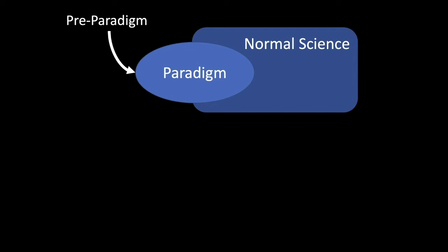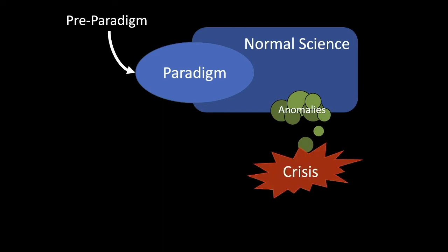But in the course of normal science, anomalies start to accumulate, intractable problems, phenomena that don't easily submit to the methods that the paradigm prescribes, events that the theory cannot explain. And if these anomalies accumulate to a great enough degree and the practitioners in the community see the anomalies as significant to the work of the paradigm, a sense of crisis arises, a kind of lack of faith in the paradigm to continue to guide research.